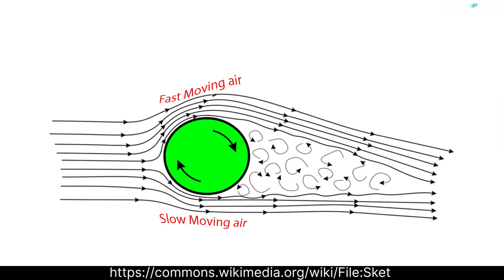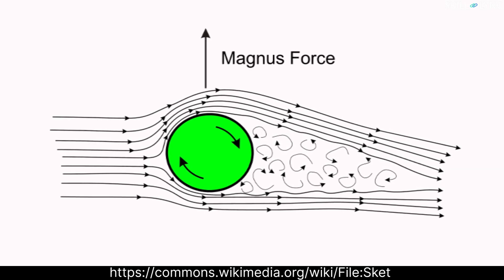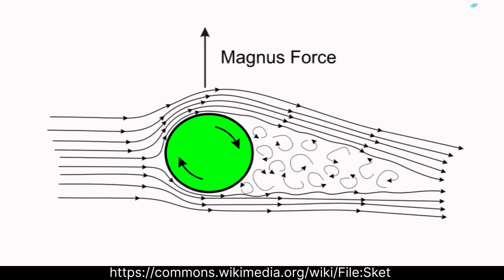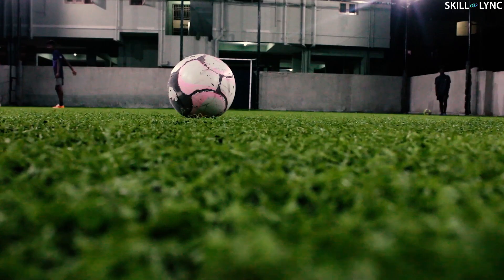The fast flowing air creates low pressure, and the slow moving air causes a buildup in the pressure. This pressure causes a small force on the cylinder called the Magnus force. This same Magnus force is what makes the football curve too.